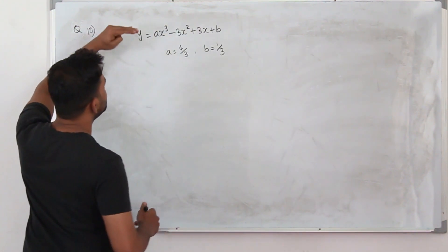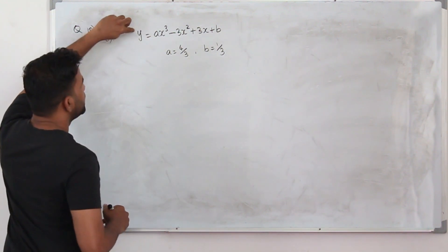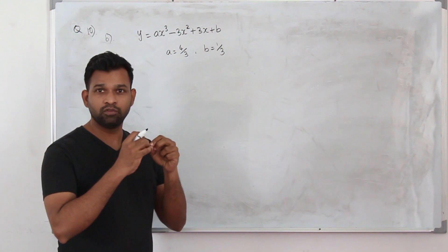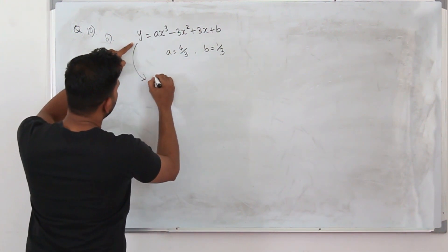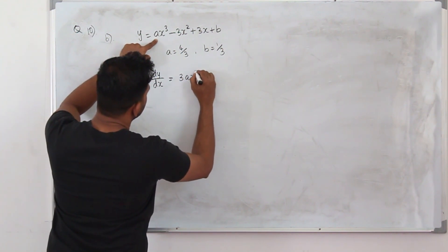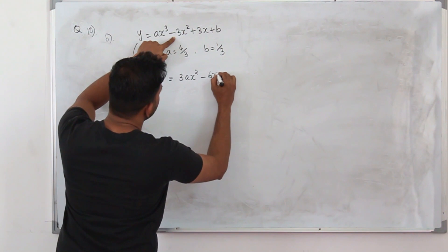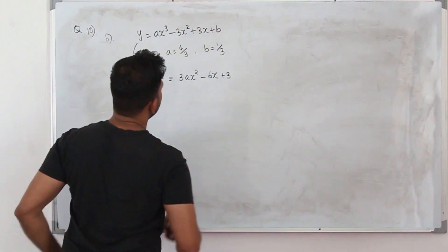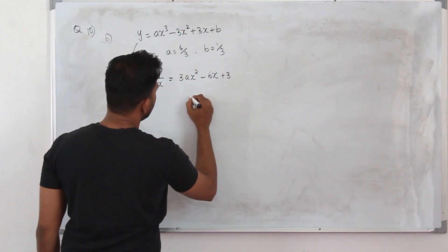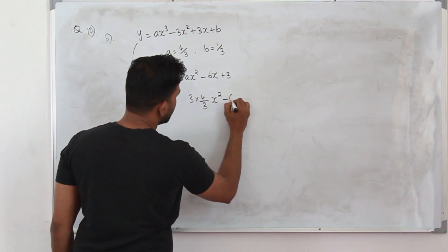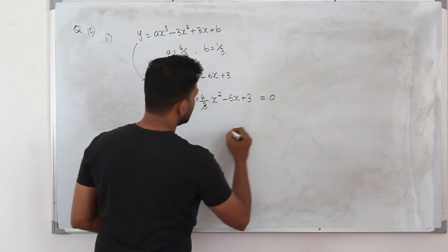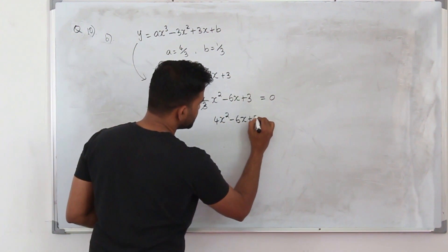For part b, we need to prove the curve has no turning points. If the curve had turning points, the gradient would be 0 there. The first derivative is dy/dx equals 3ax squared minus 6x plus 3. Substituting a equals 4/3, this becomes 4x squared minus 6x plus 3. Equating this to 0 gives the x-coordinates of any turning points.